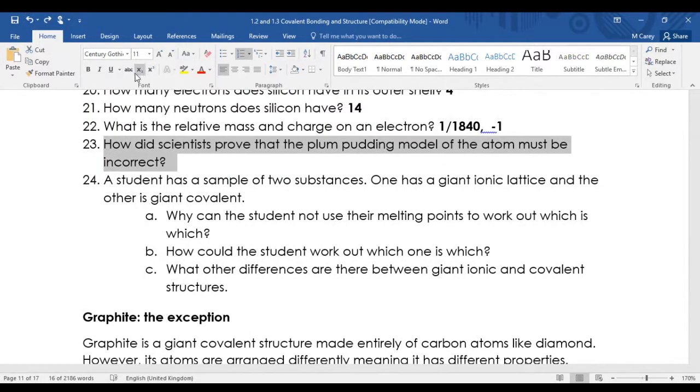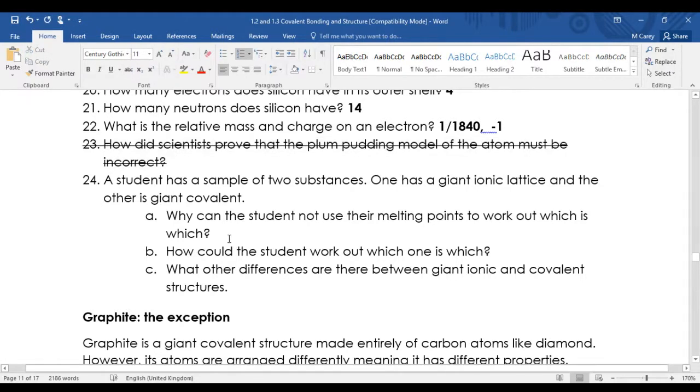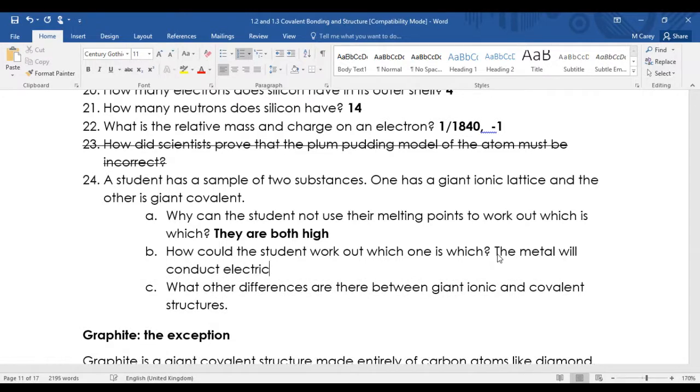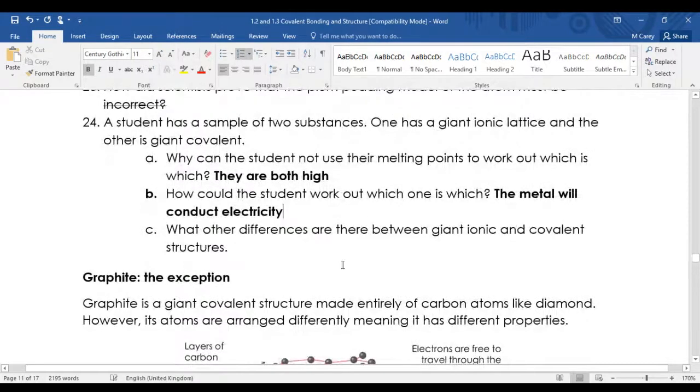A student has a sample of two substances - they're both high melting point. So a Bunsen burner is unlikely to melt either of them. How could the student work out which one is which? The metal will conduct electricity. You could say it looks shiny, makes a ringing sound when hit, conducts heat. There are a number of ones you could have there.